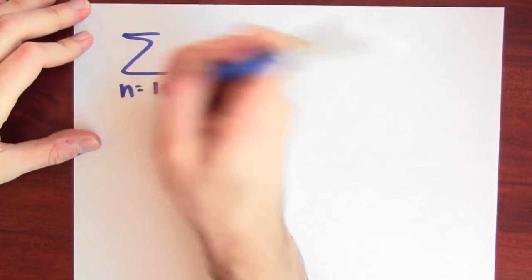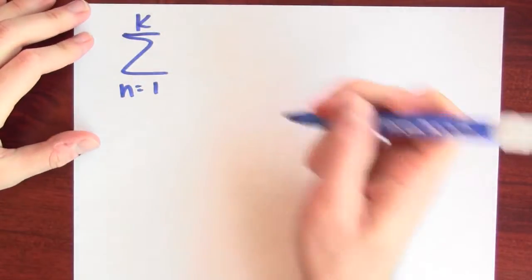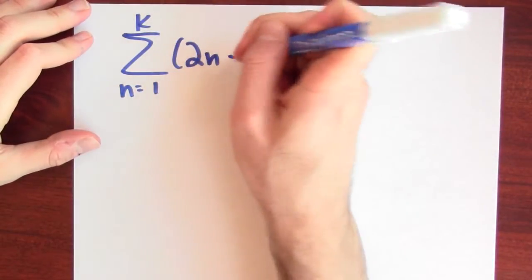Since I know about triangular numbers and I know how to sum constants, I can combine those two facts to sum more complicated expressions. For example, let's do the sum as n goes from 1 to k of 2n minus 1.